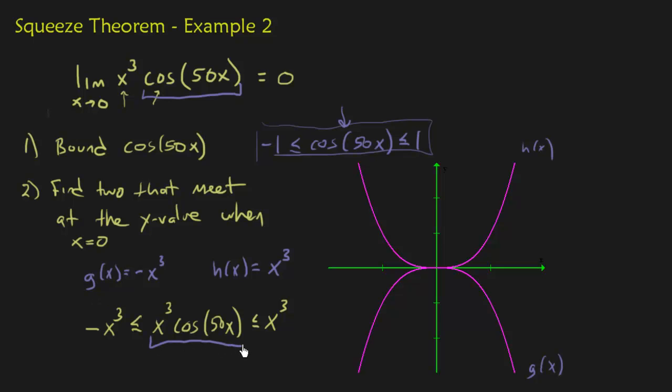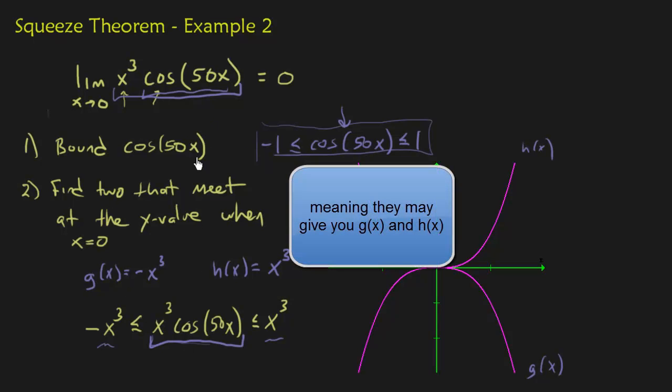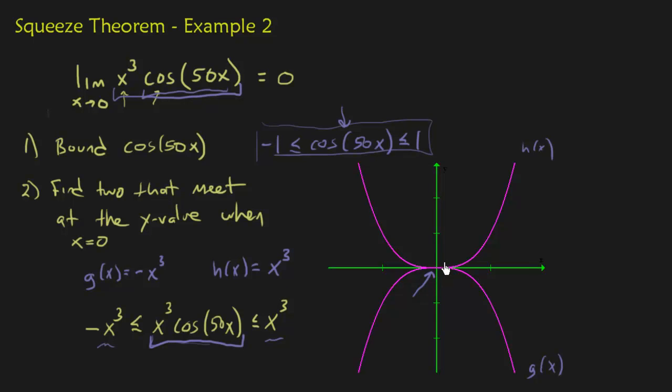And notice that this is the limit I'm trying to find. The limit as x approaches 0, I have it up here. What I just did, the whole point of this was to find two functions, one that's smaller, one that's bigger, that your function, the one you're trying to find the limit of, is in between. So it's in between these two. Some squeeze theorem problems don't require you to do this, but this one does. And notice that x cubed and negative x cubed meet right there at 0.